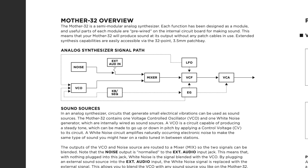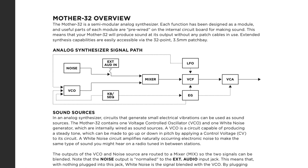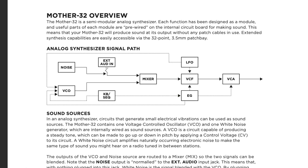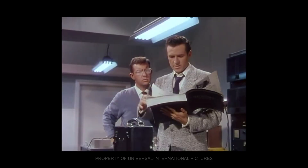Analog synths make sounds generated by circuits that produce electrical vibrations, and those are called oscillators. The oscillator circuit in the Mother 32 will create a sound that goes through all the other circuits in the synth to then shape and refine that tone.